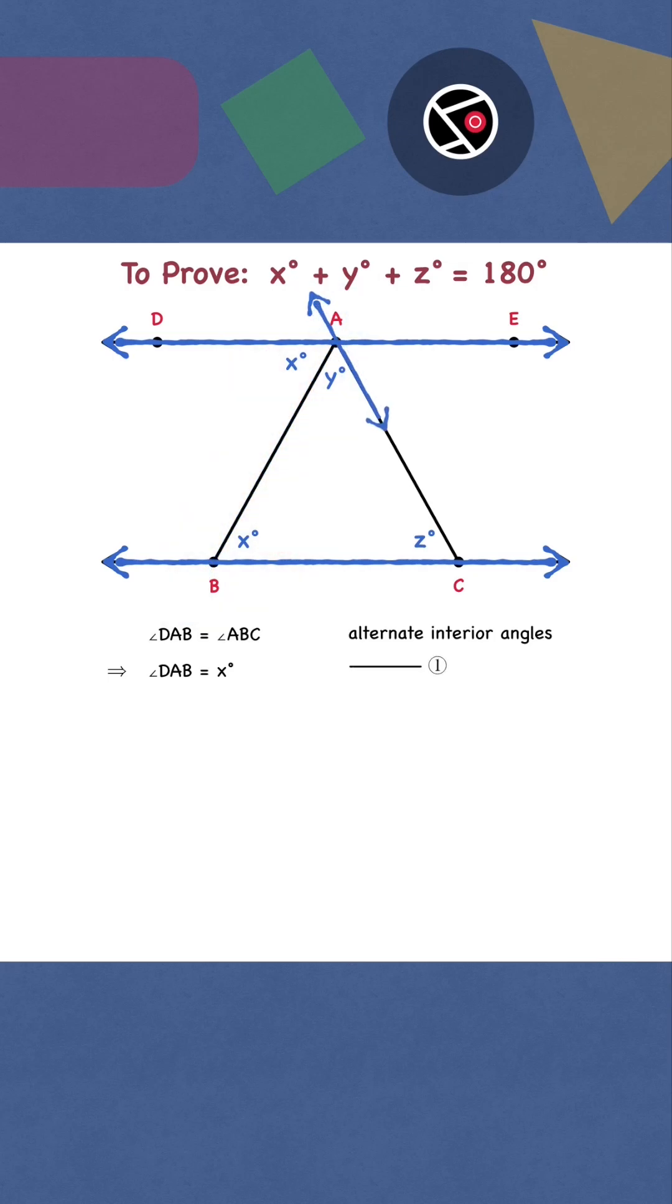Similarly, with AC as transversal, angle EAC equals angle ACB. Angle EAC is z degrees.